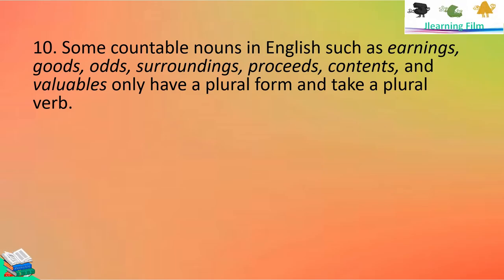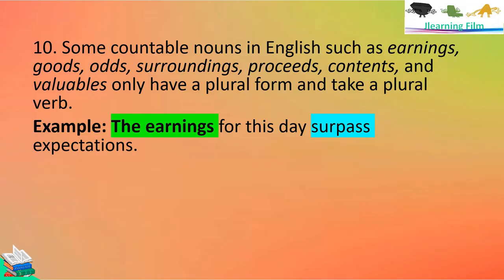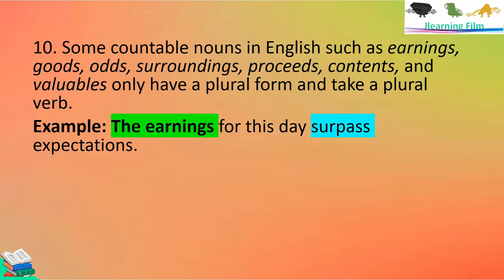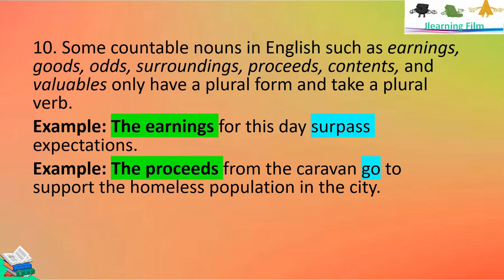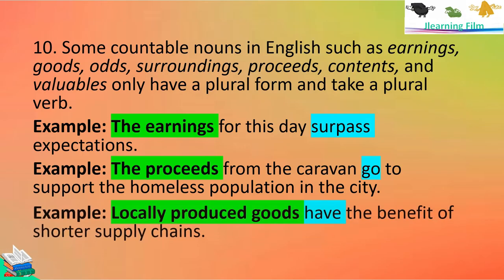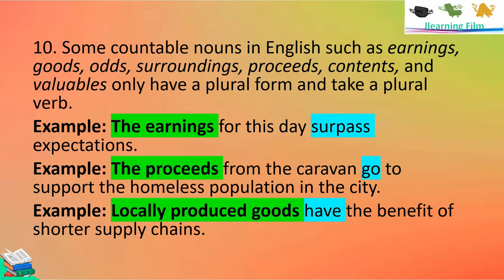Some countable nouns in English — such as earnings, goods, odds, surroundings, proceeds, contents, and followables — only have a plural form and take a plural verb. For example, 'The earnings for this day surpass expectations.' Earnings is countable, so it takes the plural verb surpass. 'The proceeds from the current one go to the support of the homeless population in the city.' Proceeds is countable, so it takes the plural verb go. 'Locally produced goods have benefits for shorter supply chains.' Goods can be counted, so we use the plural verb have.